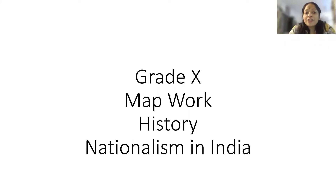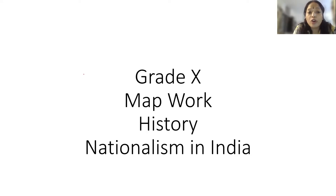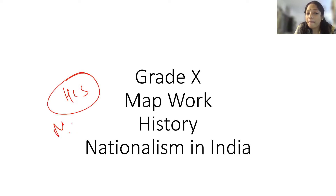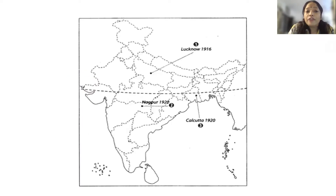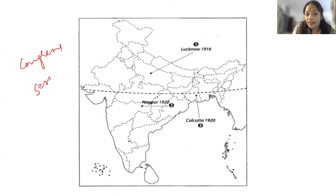Hello everyone, let's do the map work from Nationalism in India. As I told you, only this chapter from history you will be getting the map work. There are 13 to 14 places which you need to learn and it's very very simple. The first one: where were all the Congress sessions held?